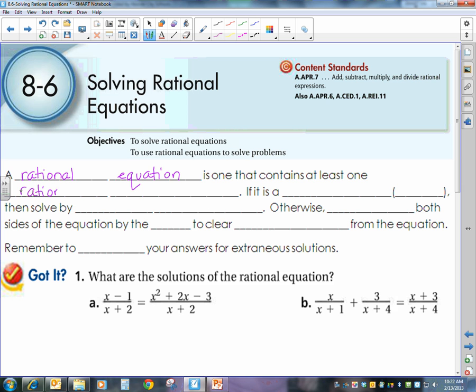Now if the rational equation is a proportion, and remember from previous years a proportion is when something is in the form a over b equals c over d.